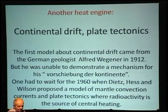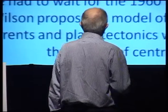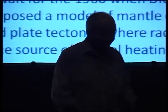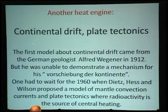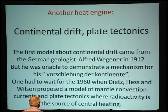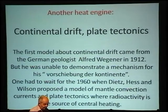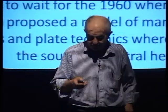Now that I have introduced the Carnot cycle, there is another Carnot cycle — and that other Carnot cycle is continental drift, plate tectonics: the fact that continents move. They move because there is a temperature gradient between the center of the Earth and the surface. We go from 1824 to 1912, where the first model of continental drift came from the German geologist Wegener. He proposed that continents moved, but was unable to demonstrate the mechanism. In the 1960s, Dietz, Hess, and Wilson proposed a model for mantle convection currents and plate tectonics. Two temperatures — the center and the surface — lead to motion.